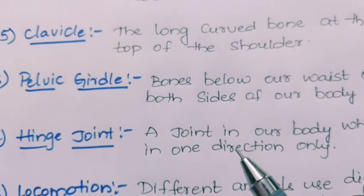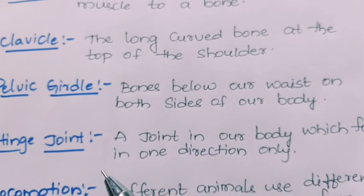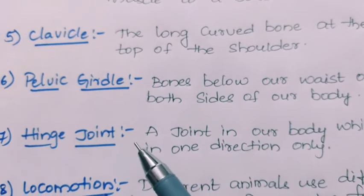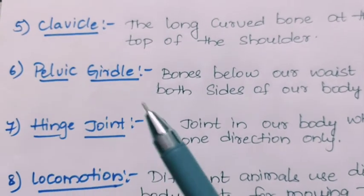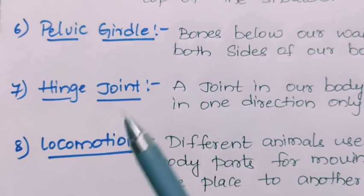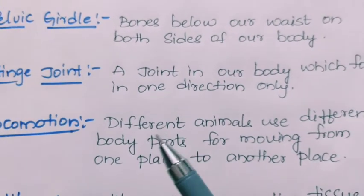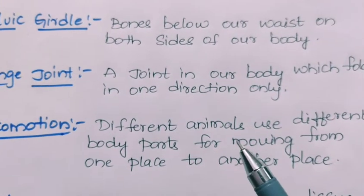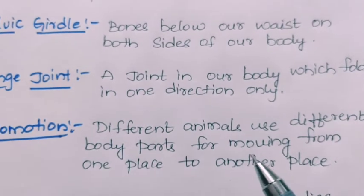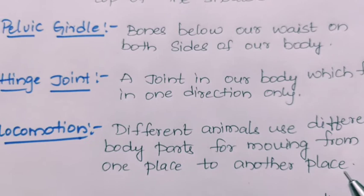Next, hinge joint. A hinge joint is a joint in our body which folds in one direction only. This joint is present at the elbow and the knee. Next, locomotion. Locomotion is how different animals use different body parts for moving from one place to another.